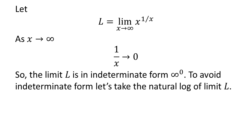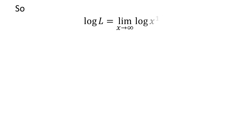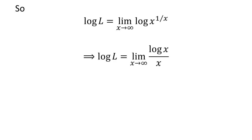To avoid this indeterminate form, let us take log of both sides. So, log of L is equal to the limit of log of x raised to the power of 1 upon x as x approaches infinity. We know that log of x raised to the power of 1 upon x is equal to 1 upon x times log of x, so log of L is equal to the limit of log of x upon x as x approaches infinity.